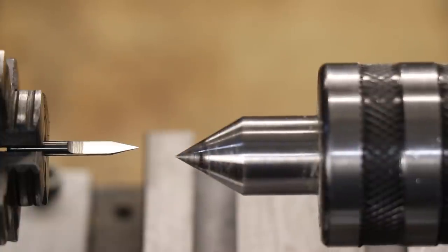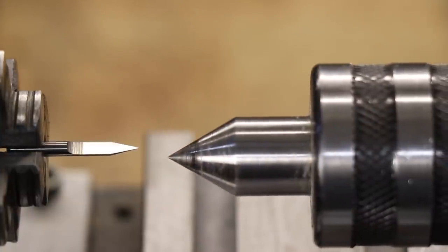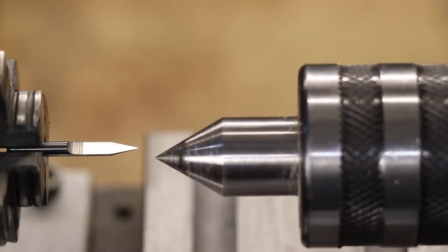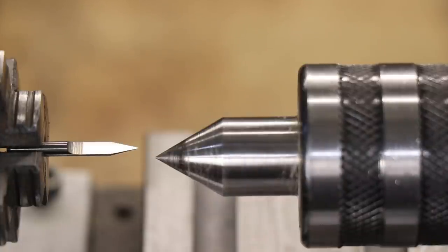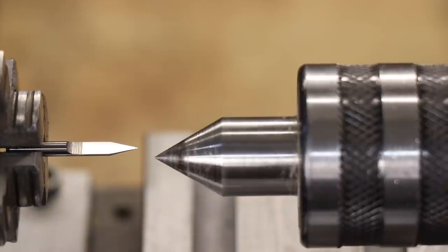The tailstock is coming out of alignment with the center line of the spindle and to be fair that can happen on pretty much any lathe. The issue that I've always had and to be fair this is an issue on most mini lathes is recentering it is not an easy job.